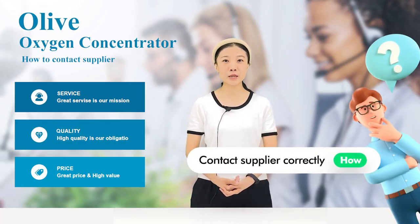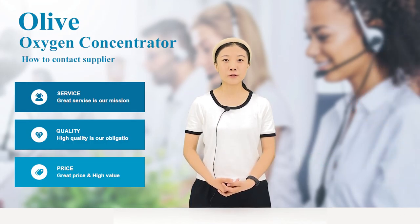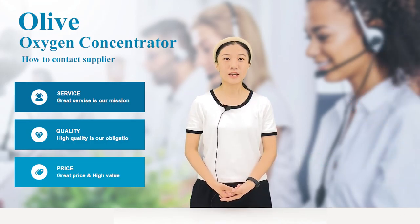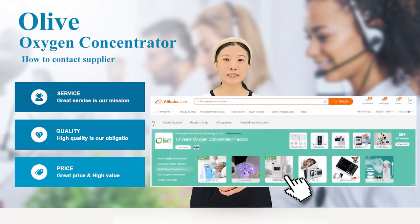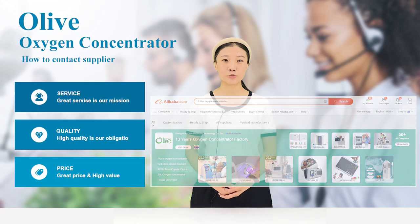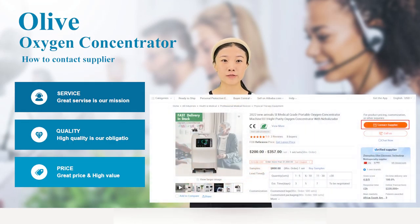How to contact Alibaba suppliers correctly. Remember the following steps. Step 1: After searching for the product you need on Alibaba, click to view the product details. Find the yellow logo of Contact Supplier on the right side of the page and click.